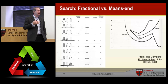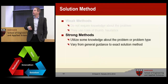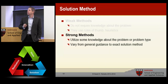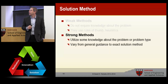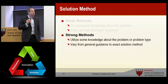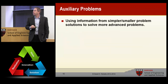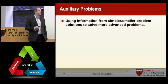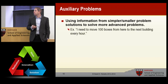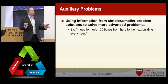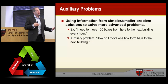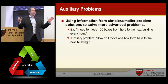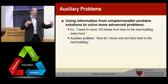Now I want to talk about strong methods. The weak methods we kind of use intuitively — they're not very robust. Strong methods are ones we're more accustomed to; they utilize some knowledge about the problem or problem type, ranging from general guidance to an exact solution. The first is auxiliary problems: using information from a simpler, smaller problem to solve a more advanced problem. For example, I need to move 100 boxes from here to the next building every day — I'm not sure how to do that, so I pick an auxiliary problem: how do I move one box? The key is not just breaking the problem into steps, but finding a simpler problem that represents the hard parts of the bigger problem and can give insight into how to solve it.